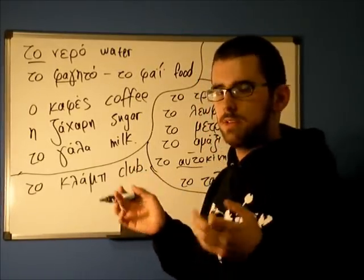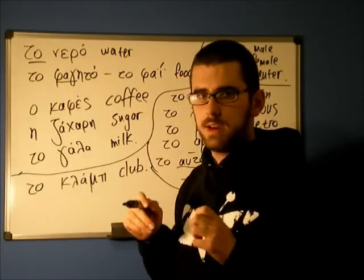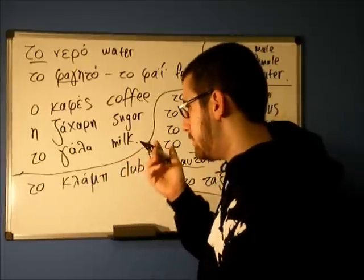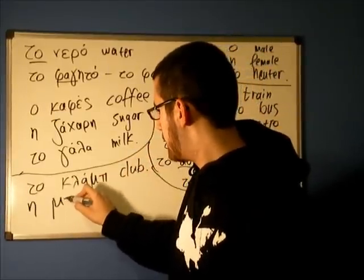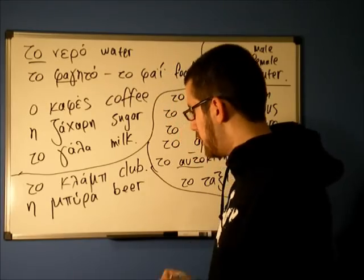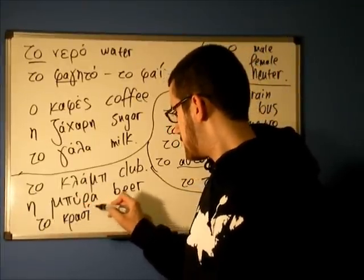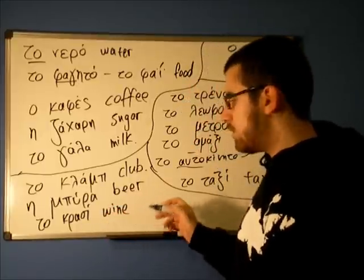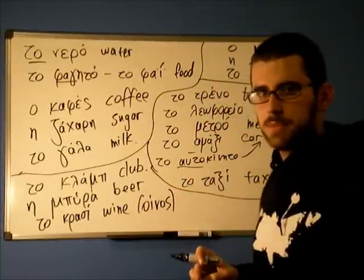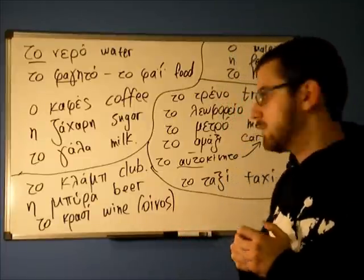When you want some alcoholic beverage, you might be asked for ID — "taftotita" — but I don't think you're going to have such problems here; they hardly ever check. Alcohol, beverages: wine, for example, beer. "I birra" is the word for beer — it's pretty similar, not that different. And "to krasi" is wine. Or, if you want it in more formal speech, "inos". When it comes to other alcoholic beverages, you're going to find them all by their name — they don't have some different name. Bacardi is Bacardi, Vodka is Vodka, and so on.